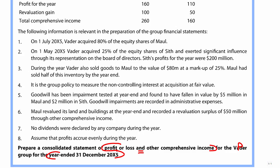Let's understand the group structure. On the 1st of July 20x5, partway through the year, VEDA acquired 80% of the equity shares of MALL. So MALL is the subsidiary with an 80% holding, which means there is a 20% non-controlling interest. Since it was acquired on the 1st of July, we are going to consolidate six months of the year.